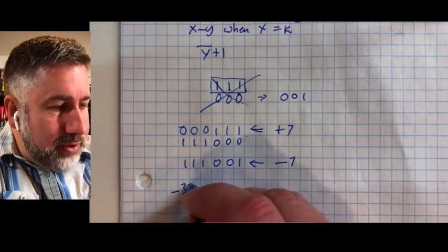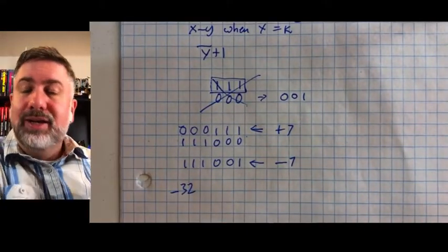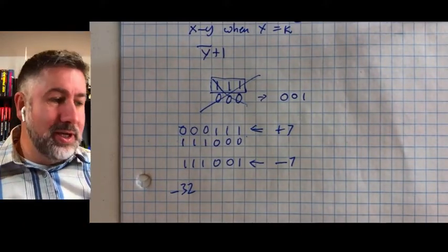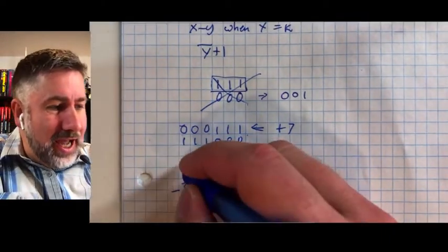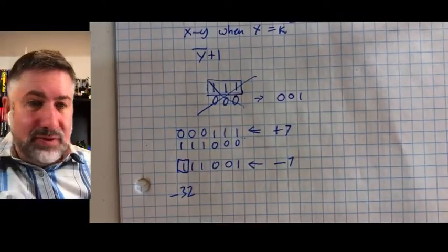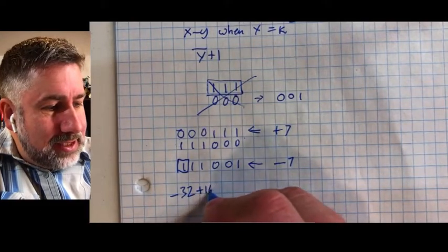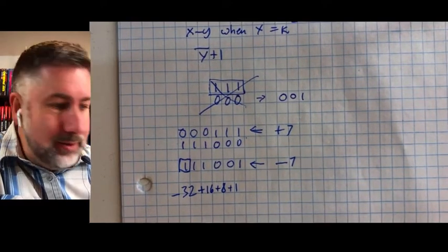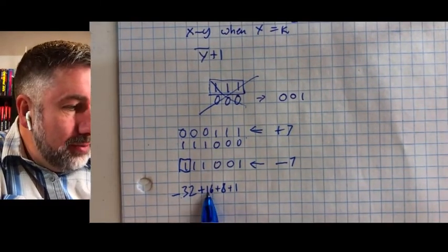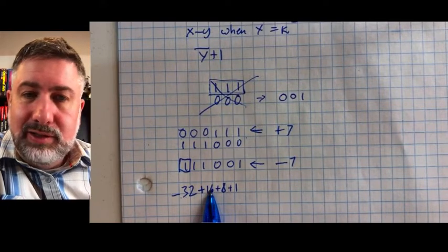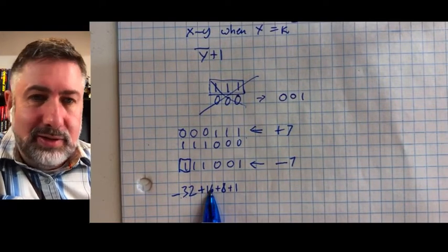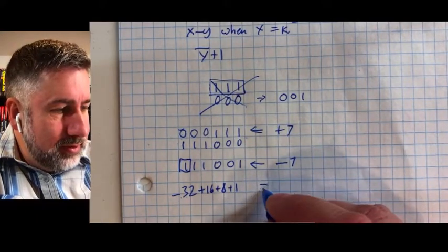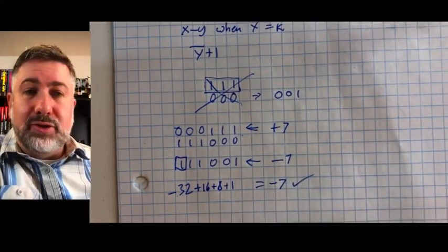This is negative 32. Remember, we said that that big number that we were subtracting out because we had to add it to the negative number in the first place. That's going to be in our representation as the top bit of our representation. That's negative 32. Then we add 16 and 8 and 1. Well, let's do the math, right? Negative 32 plus 16. Well, that's negative 16. Negative 16 plus 8. Well, that's negative 8. Plus 1 is negative 7. So that works.